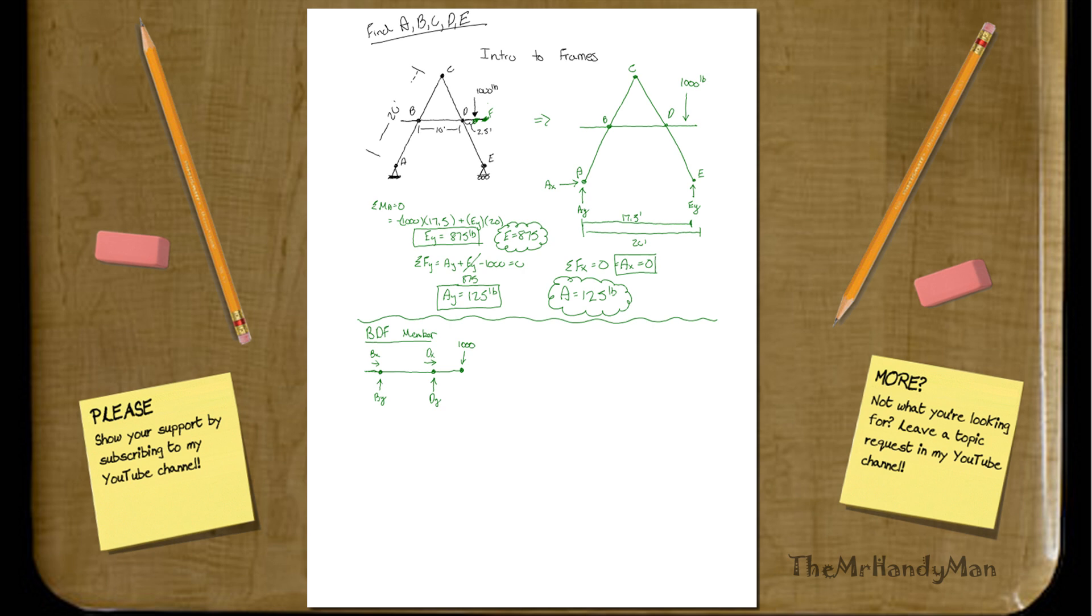Let's just skip right to the moments, because usually you can solve something with that. It'll be moment at B, which will be 10 times D_Y minus 12.5, that's the distance to 1,000, of course, times 1,000, and that'll equal zero, which you'll find that D_Y is equal to 1,250 pounds, quite a lot.